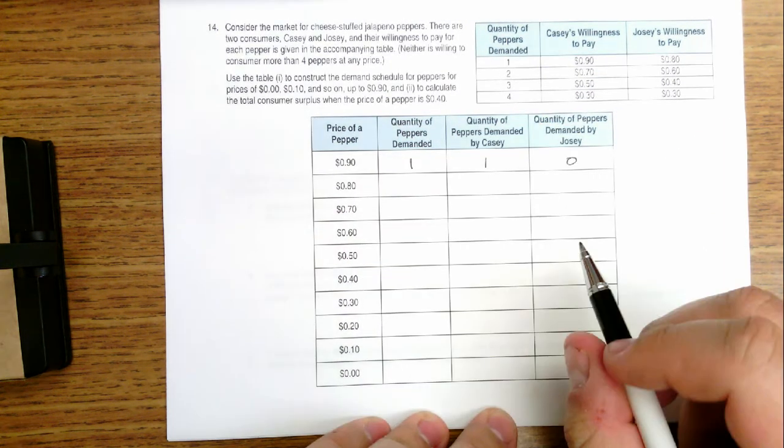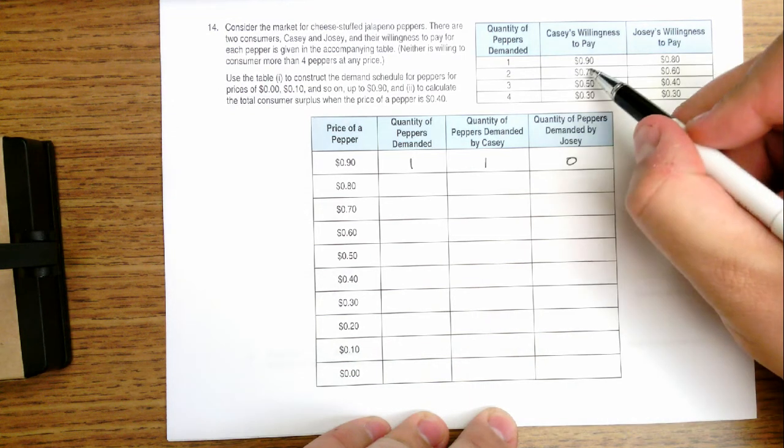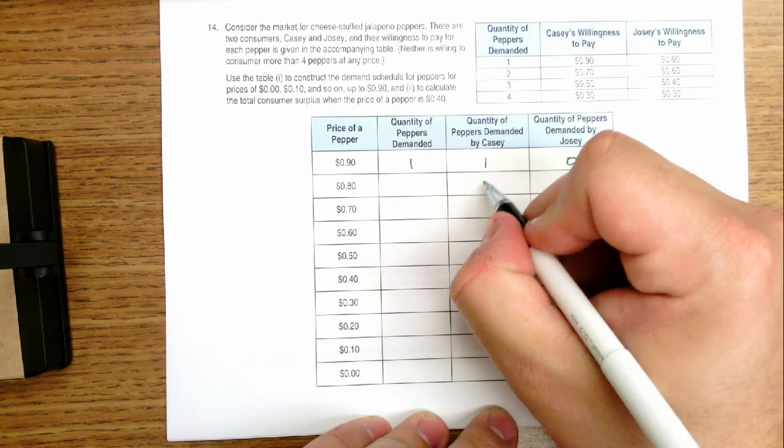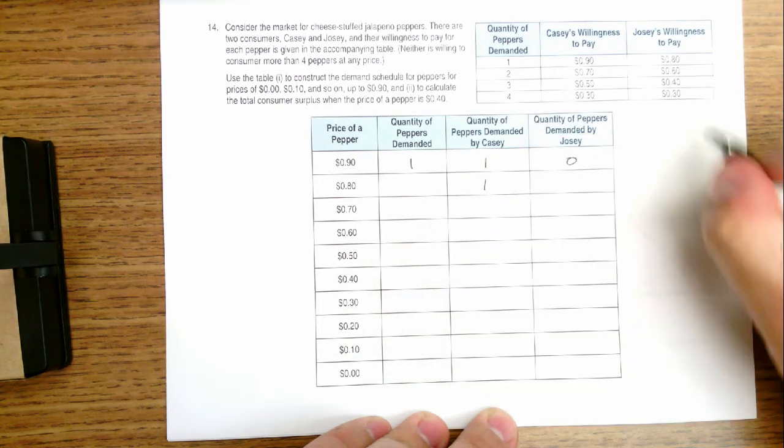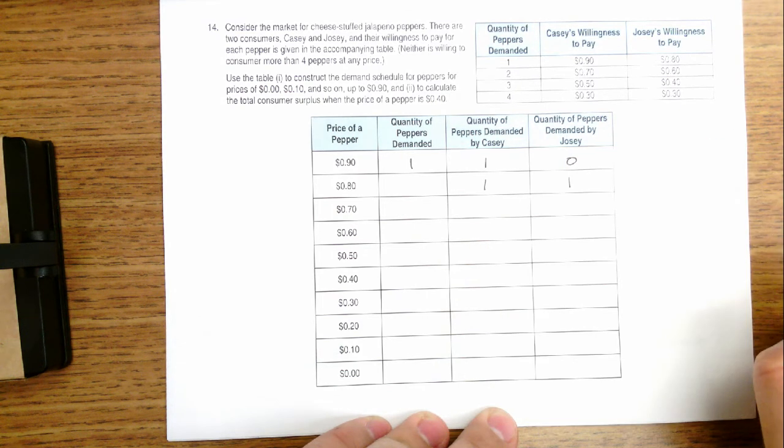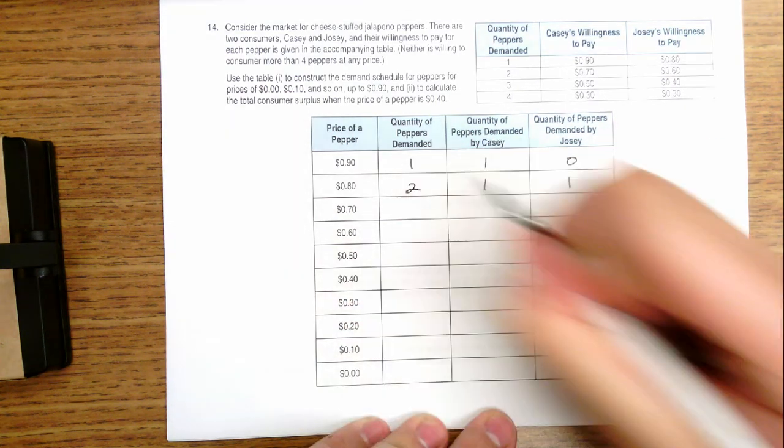If the price is $0.80, Casey's willing to pay at least $0.80, but she doesn't want an additional pepper until it's at least $0.70 cost. So Casey still only wants one pepper at $0.80. Josie now is willing to pay for one pepper because this is her maximum price. So we would say that in this case, if the price were $0.80, two peppers would be demanded.